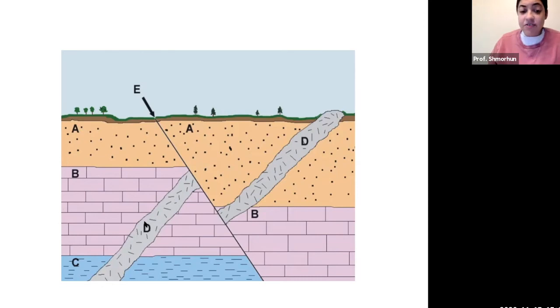We have D cutting across all of these horizontal beds, and then we have E which looks like it's offsetting these beds. Which do you think came next? Well, because E is offsetting all these beds and D cuts across through all these beds,